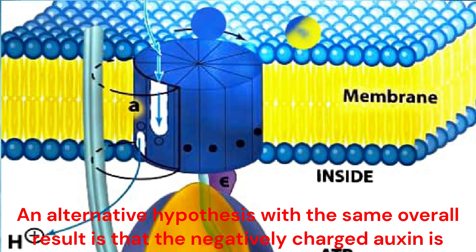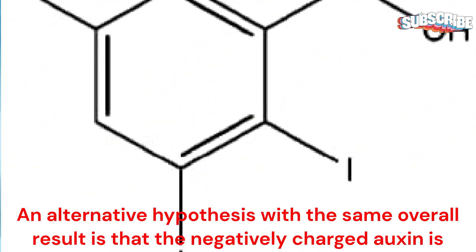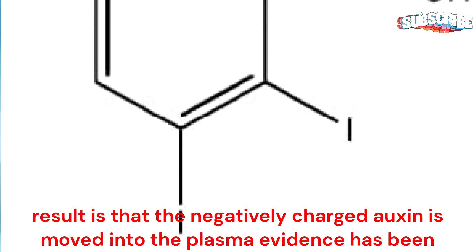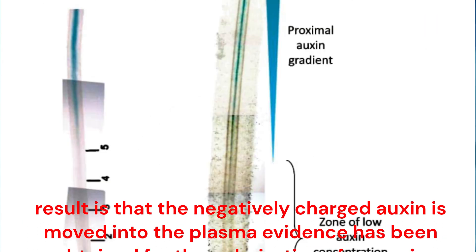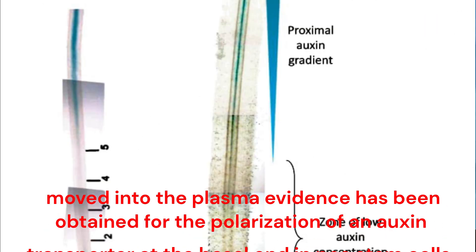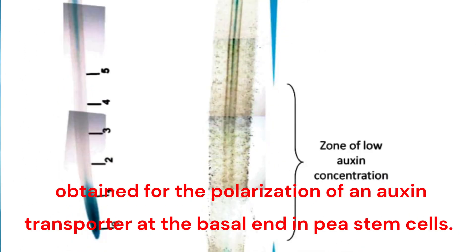An alternative hypothesis with the same overall result is that the negatively charged auxin is moved into the plasma. Evidence has been obtained for the polarization of an auxin transporter at the basal end in parenchyma stem cells.